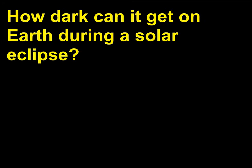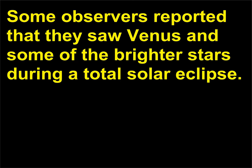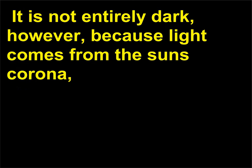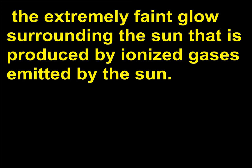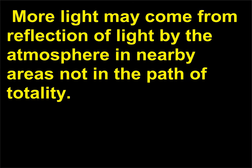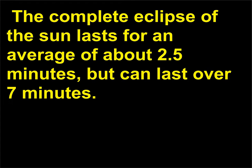How dark can it get on Earth during a solar eclipse? Some observers reported that they saw Venus and some of the brighter stars during a total solar eclipse. It is not entirely dark, however, because light comes from the sun's corona, the extremely faint glow surrounding the sun that is produced by ionized gases emitted by the sun. More light may come from reflection of light by the atmosphere in nearby areas not in the path of totality. The complete eclipse of the sun lasts for an average of about 2.5 minutes, but can last over 7 minutes.